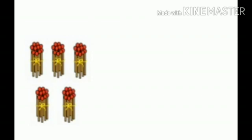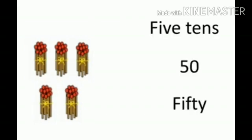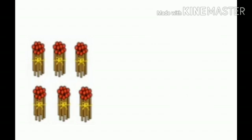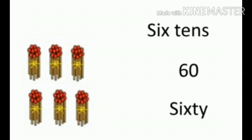Here, 5 bunches of math sticks are there. In that 5 bunches, there are 50 math sticks — 5 bunches means 5 tens. That is, 50, and the spelling of 50 is F-I-F-T-Y. Here, 6 bunches of math sticks are there. In that 6 bunches, there are 60 math sticks — 6 bunches means 6 tens. That is, 60, and the spelling of 60 is S-I-X-T-Y.